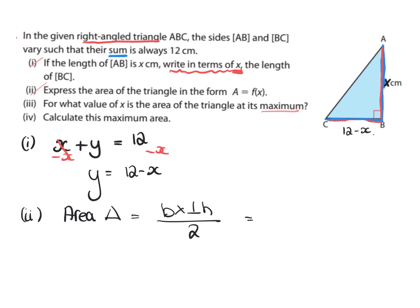So base times perpendicular height. Now your perpendicular height is always at the 90 degree angle. So our perpendicular height there is x and our base is this one here, which is 12 - x. So that is (12 - x) times x all divided by 2.